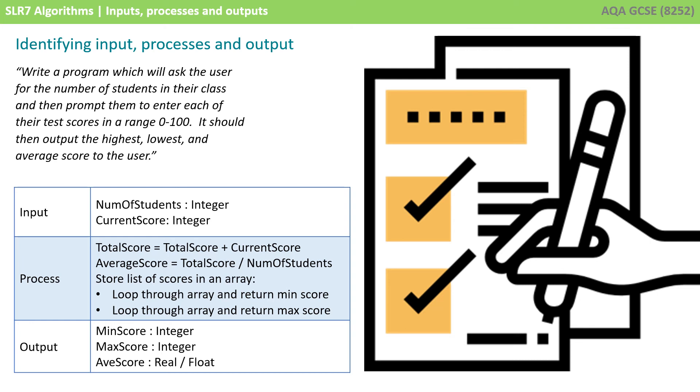And of course, having processed all this information, the program's being required to output. So we need to output min score, output max score, and also output the average score.